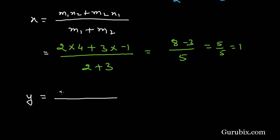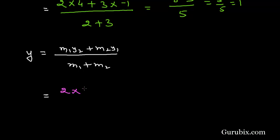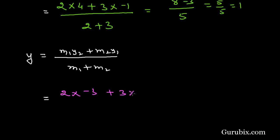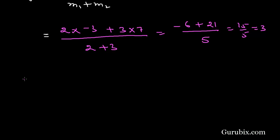The section formula for Y is: Y = (M1·Y2 + M2·Y1) / (M1 + M2). M1 is 2 and Y2 is −3, so it is 2×(−3); M2 is 3 and Y1 is 7, so it is 3×7, over (2 + 3). This means (−6 + 21) / 5, which is 15/5, which equals 3. Therefore the coordinates of point C are (1, 3). This is the solution of the question. Thank you.